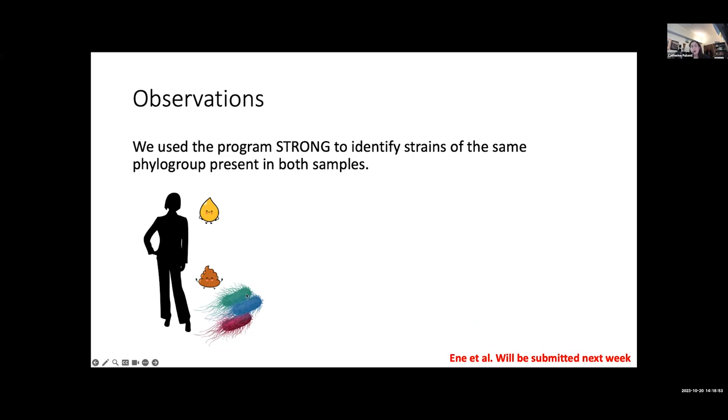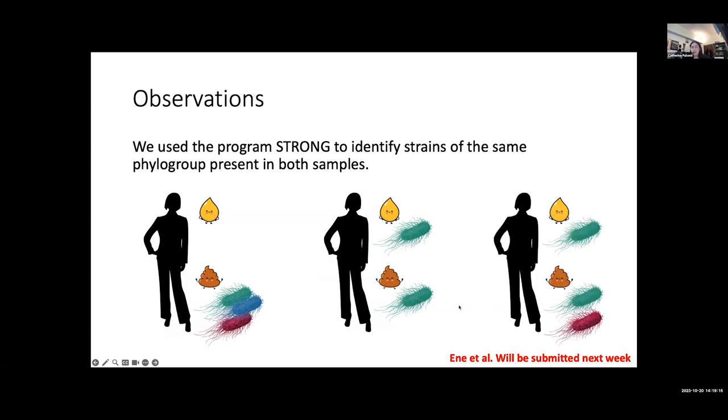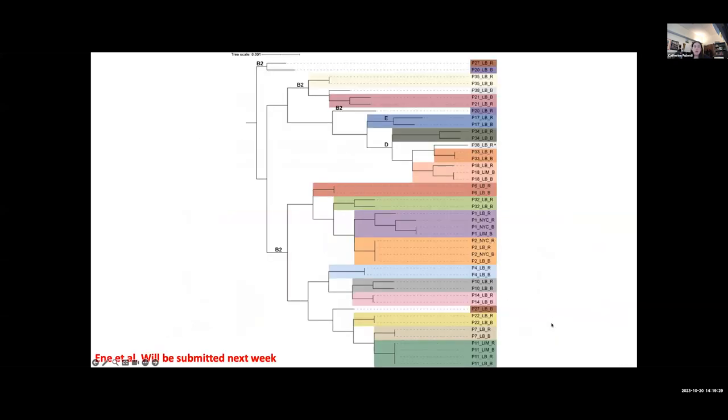We used a software tool called Strong to identify strains that were in the same phylogroup or the same haplotype or the same putative strain in the two samples. We had several observations after running this software. The first is we found instances in which Strong identified multiple different strains of E. coli within the rectal swab sample. We also found instances in which a single strain was found in both the urine sample as well as the rectal swab sample. And lastly, we had instances in which a single strain was found to be shared between the urine sample and the rectal swab sample, but sometimes the rectal swab sample also had additional strains of E. coli found.